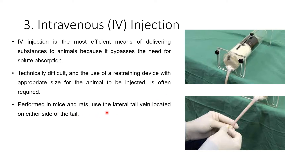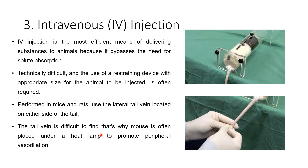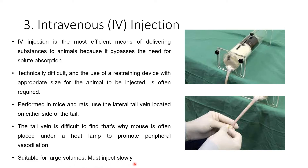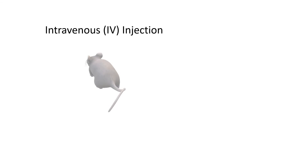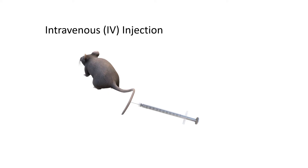Performed in mice and rats using the lateral tail vein located on either side of the tail. The tail vein is difficult to find, so the mouse is often placed under a heat lamp to produce peripheral vasodilation. When the animal is placed under the heat lamp, peripheral vasodilation occurs and then we can see the vein and give the injection. This route is suitable for large volumes, but we must inject slowly.